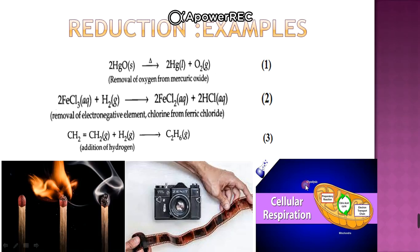Moving on to reduction examples. In the first example, mercuric oxide: oxygen is getting removed from mercuric oxide. So we say removal of an electronegative element — this is reduction happening. Similarly, from cupric chloride, removal of an electronegative element. So here we have CO3 and this is CO2 — again a reduction example.